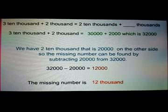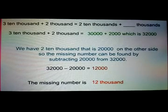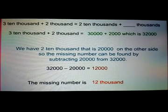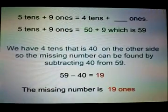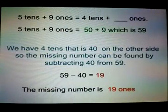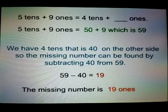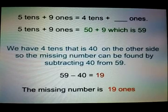Plus 2,000 which is 32,000. To find the missing number, subtract 20,000 from 32,000 to get the answer as 12,000. Next example: 5 tens plus 9 ones equal to 4 tens plus dash ones. 5 tens plus 9 ones equal to 50 plus 9 which is 59. To find the missing number, subtract 40 from 59 to get 19. That is the missing number 19.